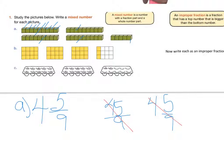Let's look at B. We have three wholes and three left over. Out of how many? Let's check — one whole section has twelve pieces (three by four, it's an array). So three and three-twelfths would be the mixed number for that one.